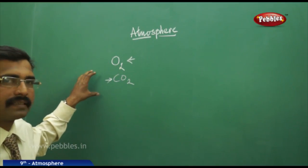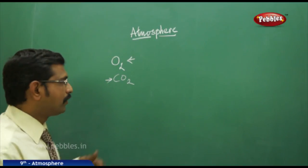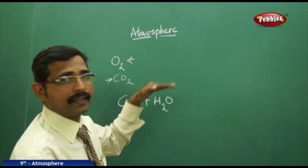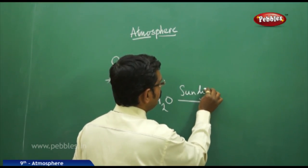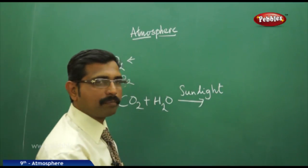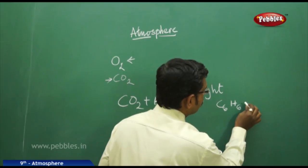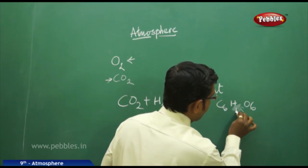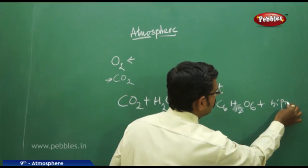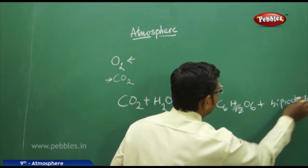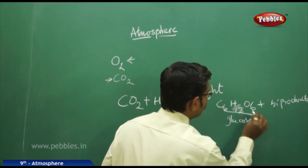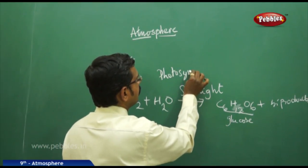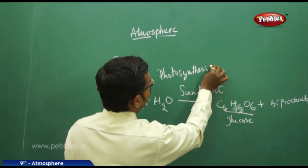The very interesting thing is plants take carbon dioxide with the help of water under sunlight. They become glucose and other byproducts. That means this is nothing but photosynthesis, without which you can't get any food from the plants.